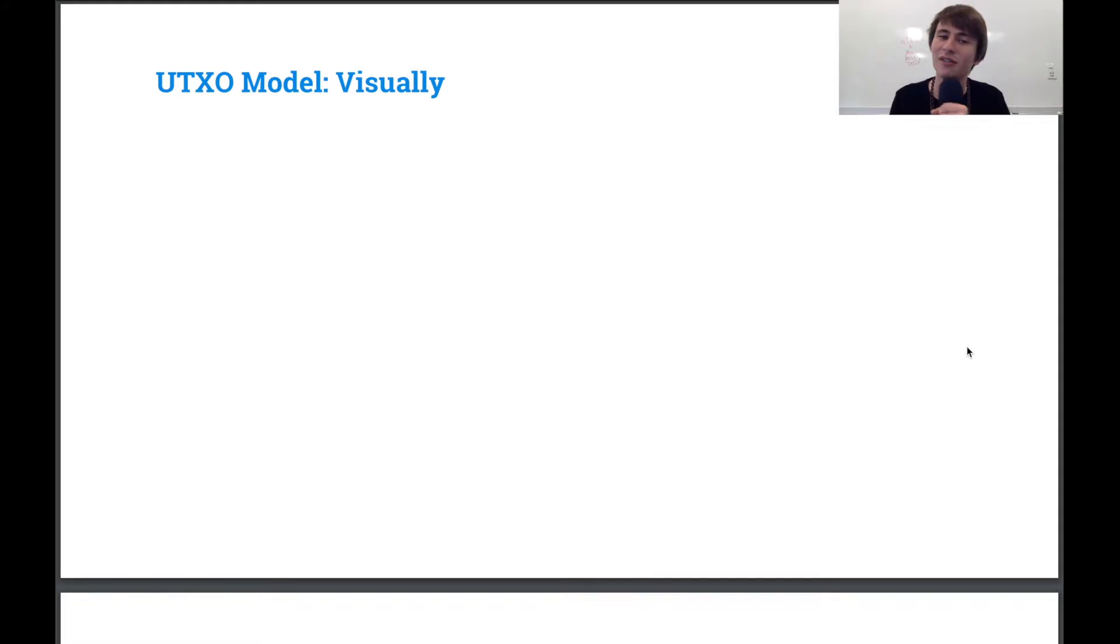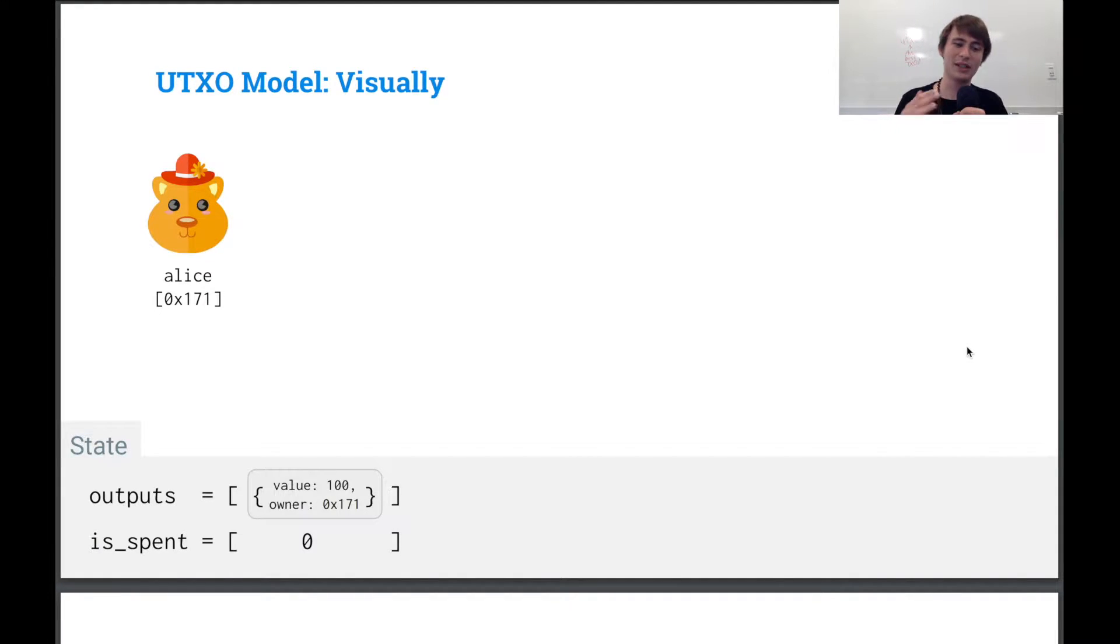But now let's look at it visually. So we have Alice. Alice has her state. She's got basically a list of outputs and an is spent bit field. And this list of outputs has, you know, she has the value of 100, and she's the owner of this one. And is it spent? Well, zero means unspent, and one means spent.